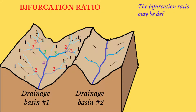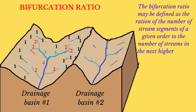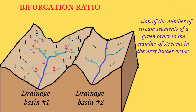We can use stream order to calculate another morphometric element known as bifurcation ratio. The bifurcation ratio may be defined as the ratio of the number of stream segments of a given order to the number of stream segments in the next higher order. Bifurcation ratio can be used to compare two different drainage basins.